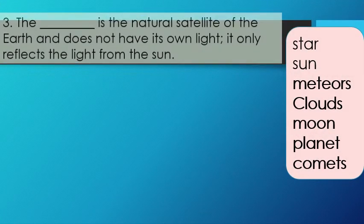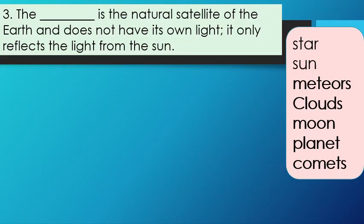Number 3: The blank is the natural satellite of the earth and does not have its own light. It only reflects the light from the sun.